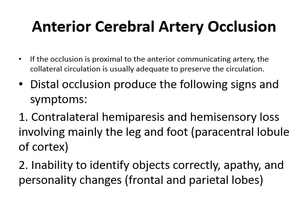If the occlusion occurs distal to the anterior communicating artery, you will get contralateral hemiparesis — paralysis of one side of the body opposite to the block — and hemisensory loss on the opposite side. So if the block is on the right, you will see symptoms on the left. That is because of the paracentral lobule of the cortex, the medial aspect of the cerebral hemispheres. There will also be inability to identify objects correctly, apathy and personality changes due to the frontal prefrontal cortex, and also parts of the parietal lobe being affected.